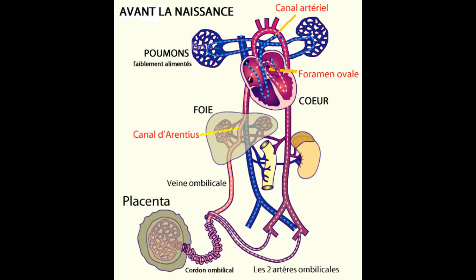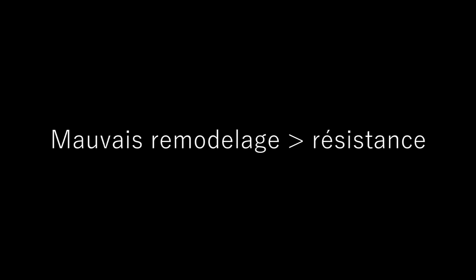Voici un schéma animé en guise de résumé de la circulation fœtale. Pour évaluer le bon déroulement de cette circulation, on peut faire des Dopplers qui nous indiqueront s'il y a une souffrance fœtale. En cas de mauvais remodelage vasculaire chez la mère, des résistances vont apparaître au niveau du placenta. Plus la résistance est élevée, plus le débit chute dans les artères ombilicales. C'est pourquoi il est intéressant de réaliser cet examen.